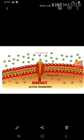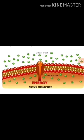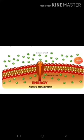Active transport utilizes energy. It is carried out by membrane-bound proteins. These proteins use energy to carry substances across the cell membrane and are referred to as pumps. Pumps can transfer substances from low concentration to higher concentration.